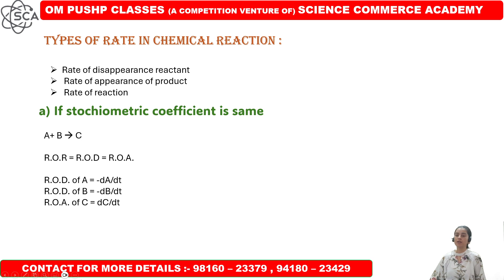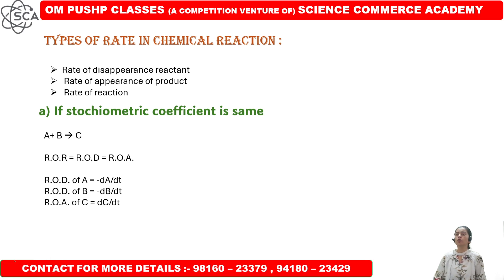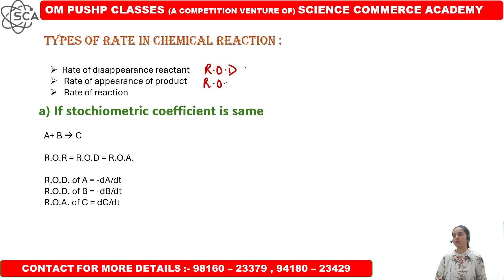First of all, if I talk about types of chemical reaction rates, in a chemical reaction we have rate of disappearance, rate of appearance, and rate of reaction. We are going to discuss each of these, along with factors affecting rate of reaction.